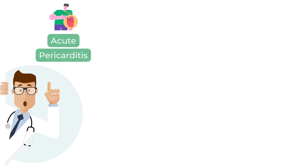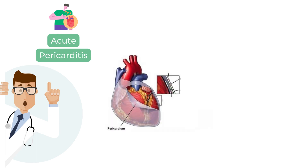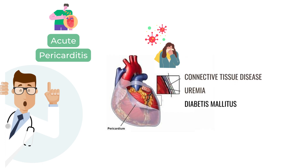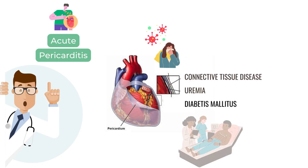What is acute pericarditis? It is simply an acute inflammation of the pericardium, which is the sac surrounding the heart. The most common cause of pericarditis is infection, especially a viral infection. There are numerous other causes, some of which are significant: connective tissue disease, uremia, and diabetes. It can also happen in the post-myocardial infarction situation, typically after a few weeks as healing is occurring — you can have a late occurrence of pericarditis.